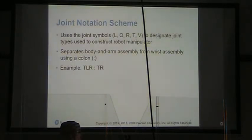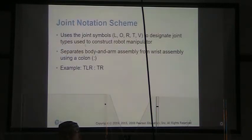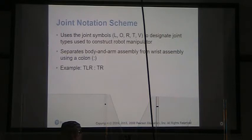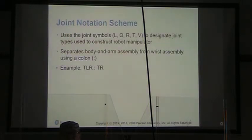Our joint notation scheme uses the symbols type L, O, R, T, and V to designate joint types in the robot manipulator. We separate the body and arm assembly from the wrist assembly with a colon. For example: TLR:TR, where TLR describes the body/arm and TR describes the wrist.